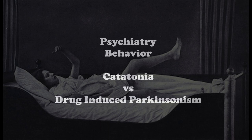You treat catatonia with benzodiazepines such as lorazepam, but for very severe or intractable cases, you can use electroconvulsive therapy. Usually, you want to do a trial of intravenous lorazepam to support your diagnosis, and you want to look for any relief of the patient's symptoms.